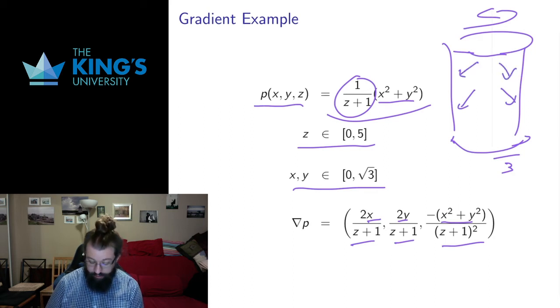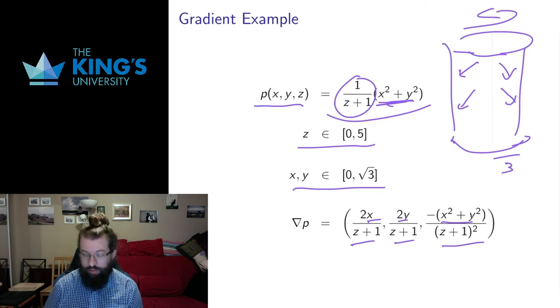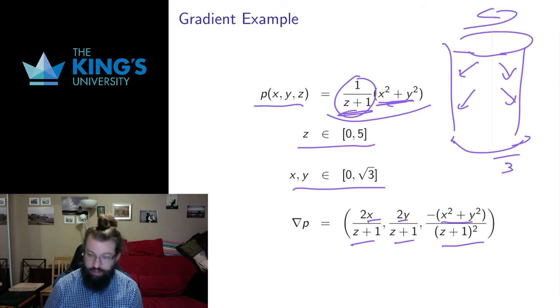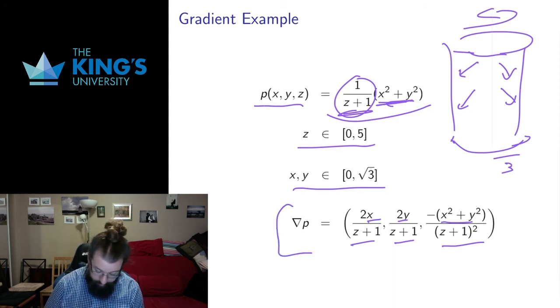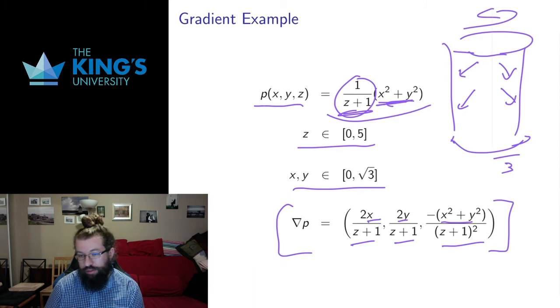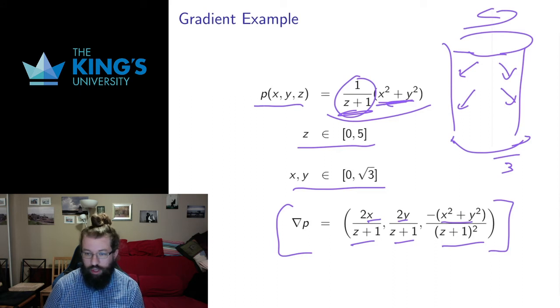And that makes perfect sense, because we know that the pressure is largest near the outside of the cylinder. So these things are pointing out. And the pressure is largest at the bottom of the cylinder, sort of pointing slightly down. So we can really see fairly clearly in this situation how the gradient is pointing in the direction that the pressure increases towards the outside and down.